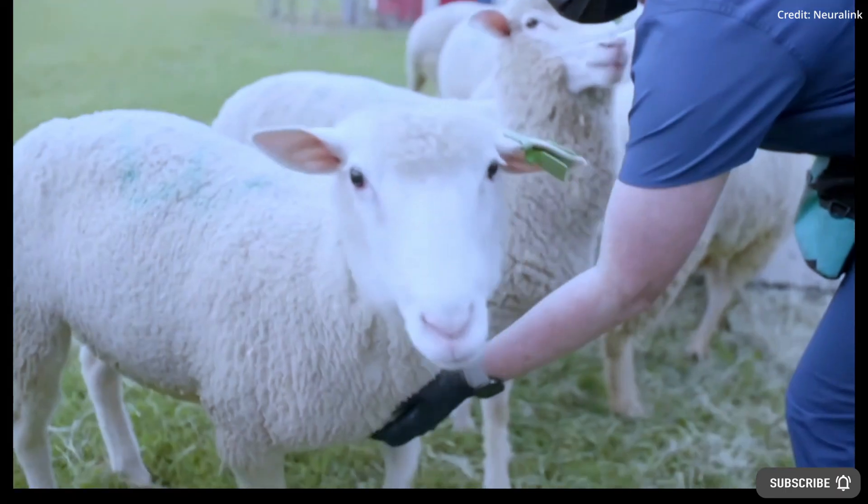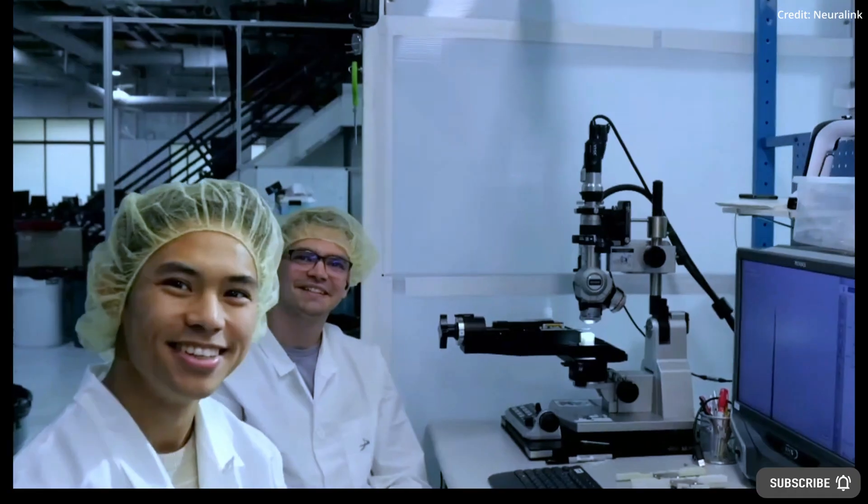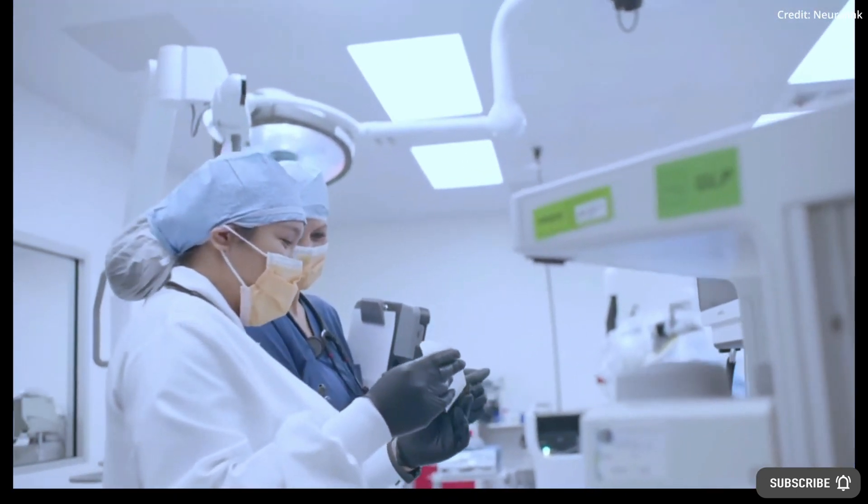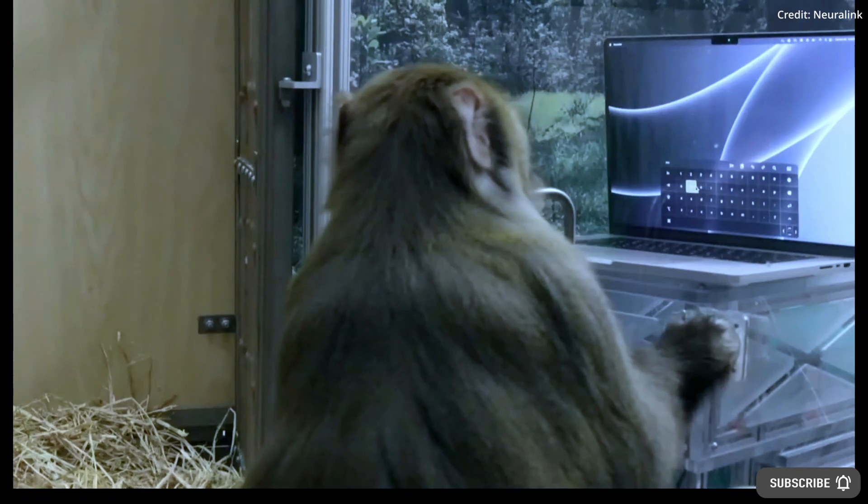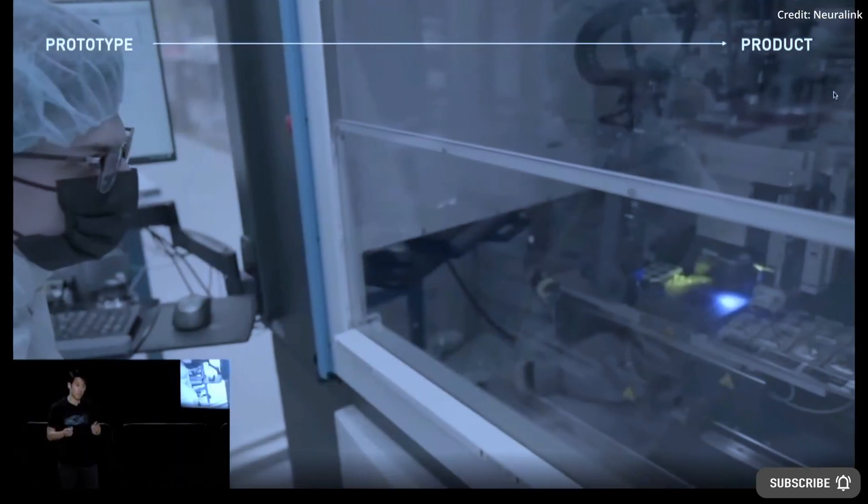The initial goal of the technology is to help people with paralysis regain independence through the control of computers and mobile devices. The devices are therefore currently being designed to one day give people the ability to communicate more easily via text or speech synthesis, to follow their curiosity on the web, or to express their creativity through photography, art, or writing apps.